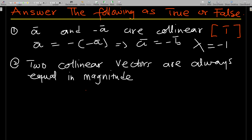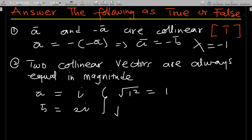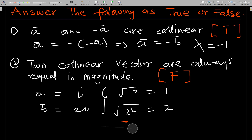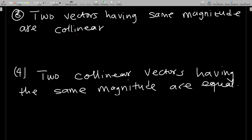True or False: two collinear vectors are always equal in magnitude. Consider a = i and b = 2i. The magnitude of a is 1, and the magnitude of b is 2 — these are not equal. So this statement is false; two collinear vectors are not always equal in magnitude.